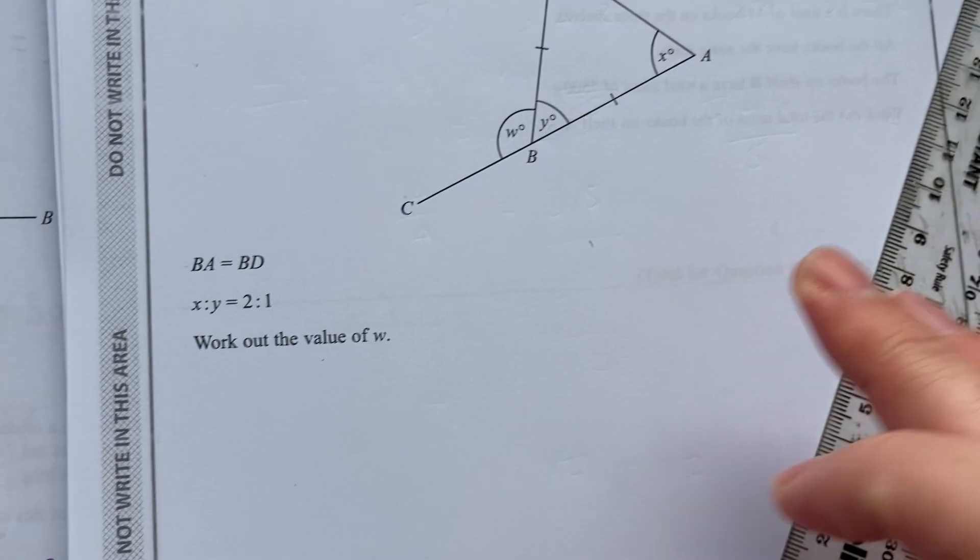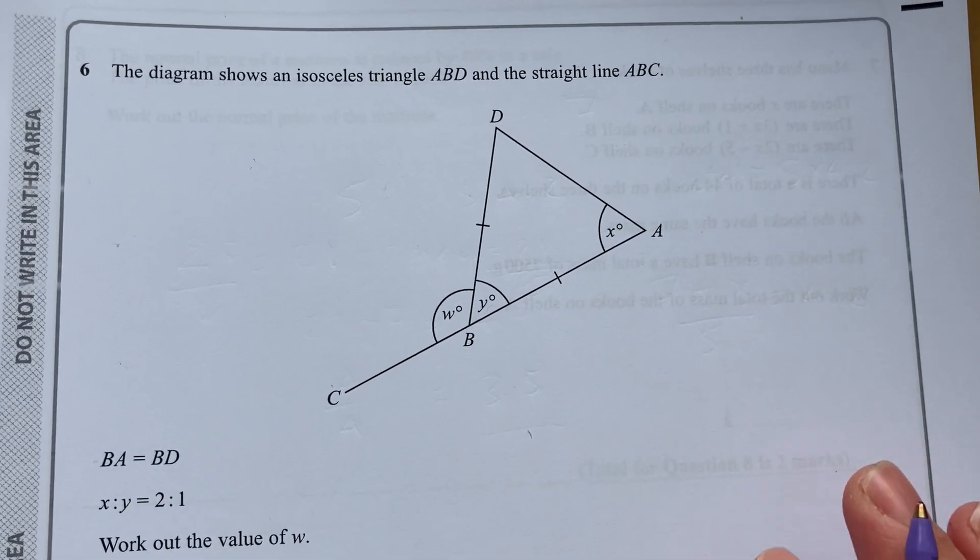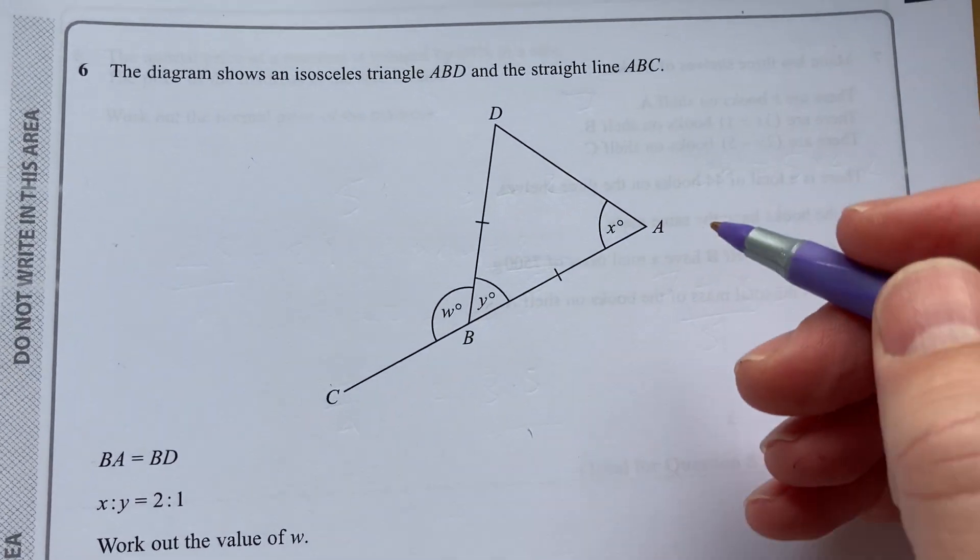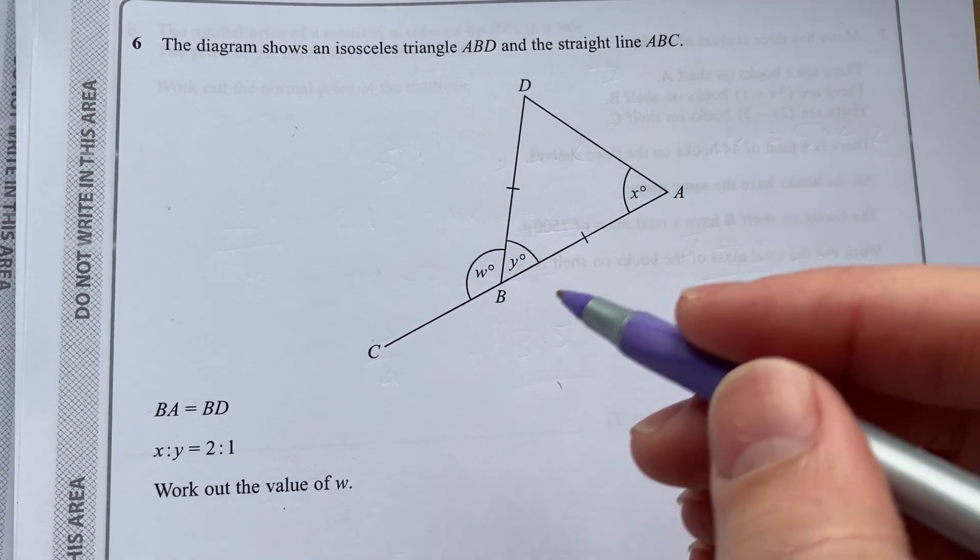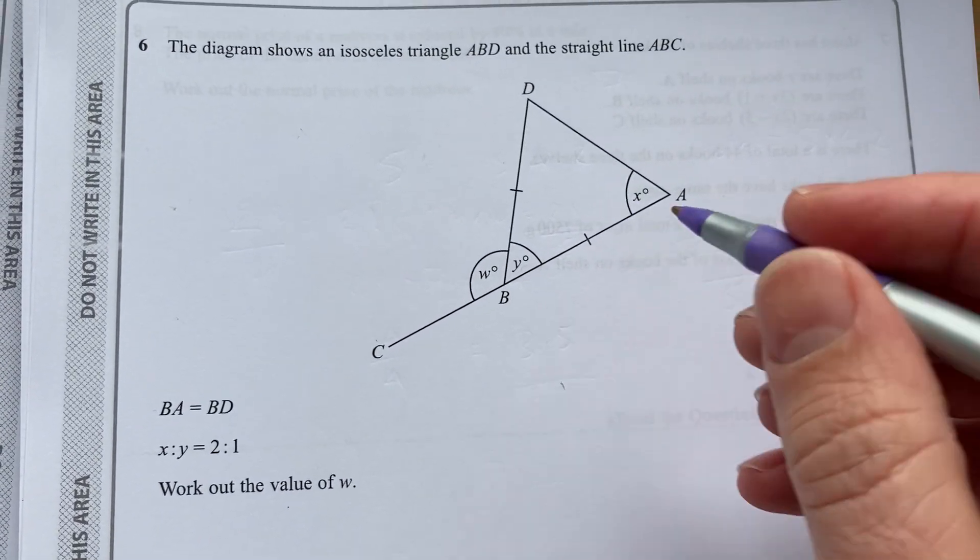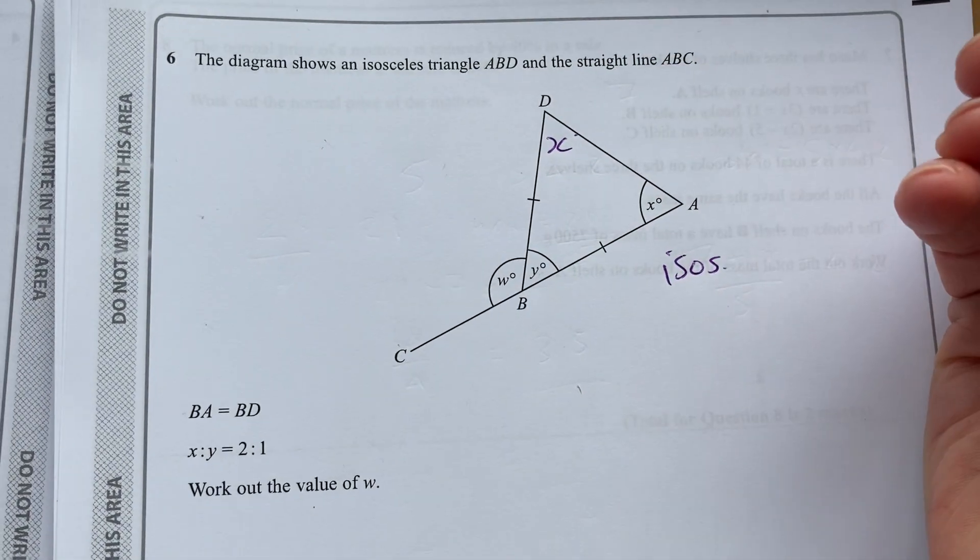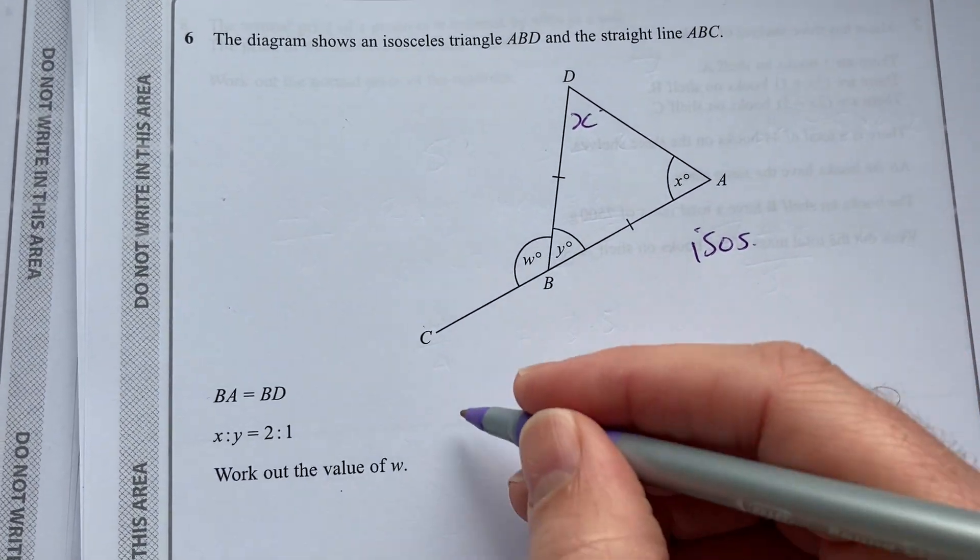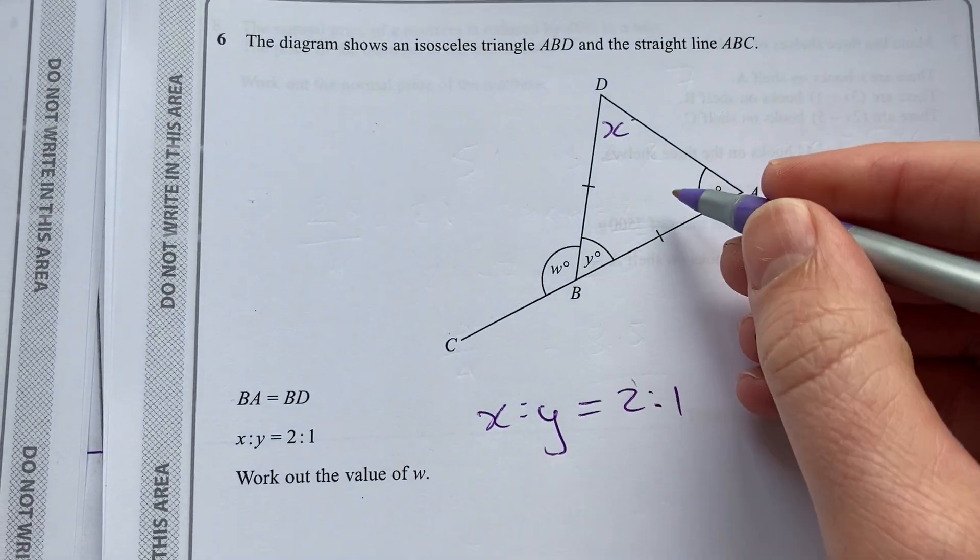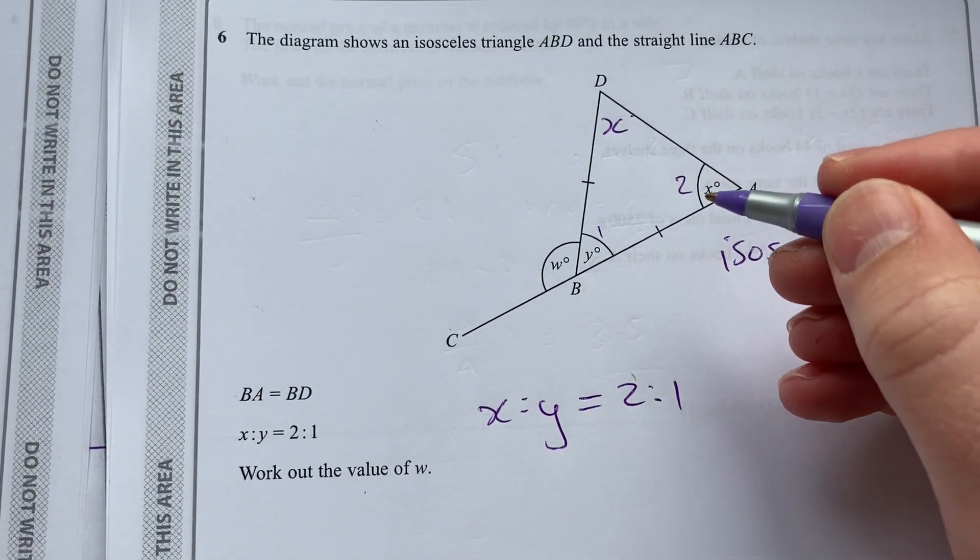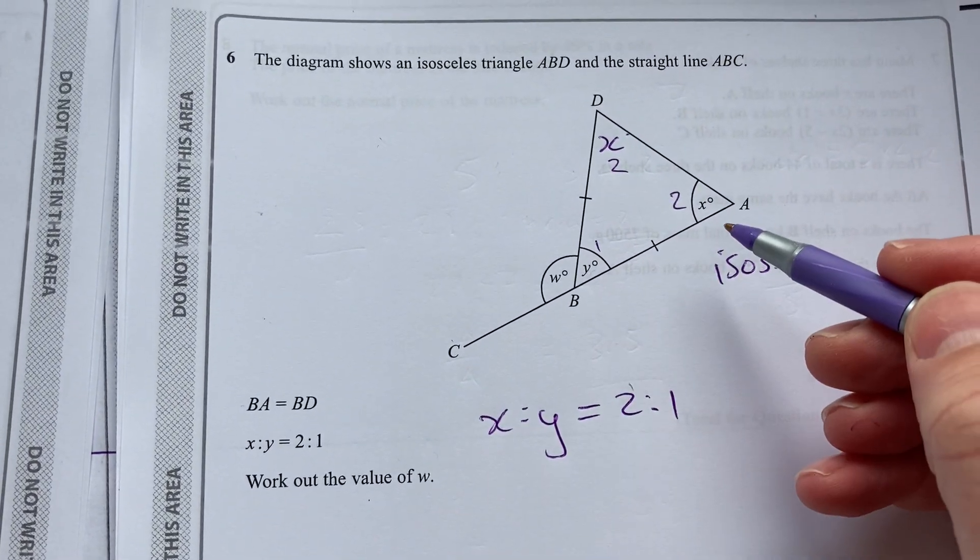Let's move on to question 6. It's a triangles and angles question. The diagram shows an isosceles triangle ABD and the straight line ABC. BA equals BD. So we know that's an isosceles triangle. I'll just write in that's probably X as well. That is X as well. Now they tell us that X to Y is 2 to 1. So this is double that. That's twice that. And that'll be also another 2. So work out the value of Y.